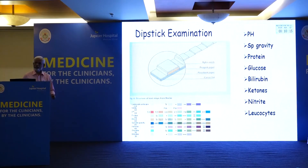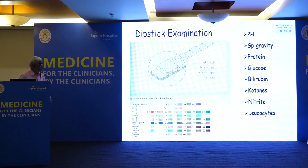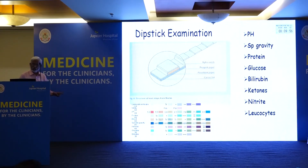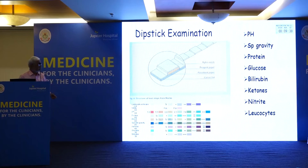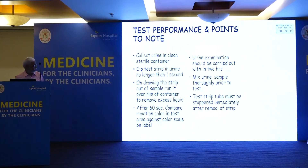If a patient is febrile and bilirubin comes positive, the possibility is hepatitis — bilirubin appears in urine before enzymes start increasing. If a patient has normal blood glucose but glucose is present in urine, think of proximal tubular dysfunction. Nowadays the commonest cause of glycosuria is SGLT2 inhibitors. Protein is the earliest marker of kidney involvement, and specific gravity gives an idea about concentrating and diluting ability of the kidney.